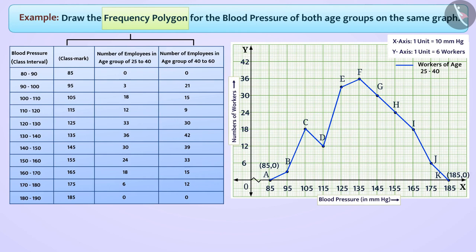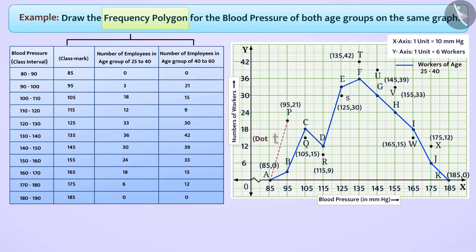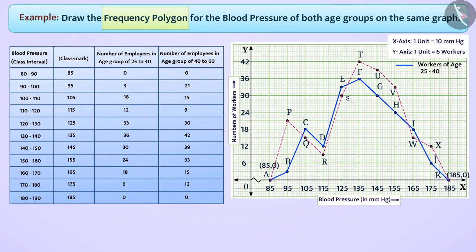In this way, the different points to denote the number of employees between the ages of 40 and 60 will be as follows. We will connect all the points with dotted line segments, which gives us the frequency polygon A P Q R S T U V W X K, denoting the number of employees aged 40 to 60 and their blood pressure. To show that a polygon made with dotted line segments represents the age group 40 to 60, we write the corresponding sign.